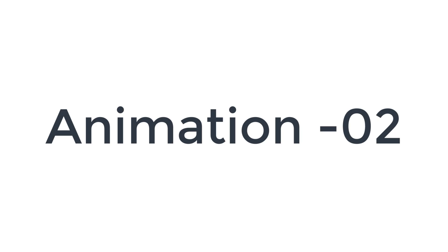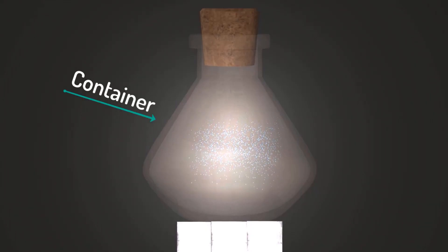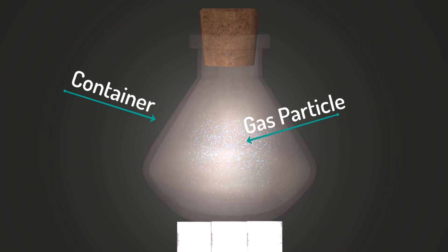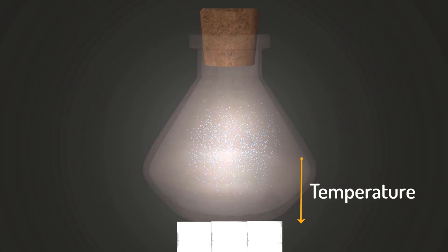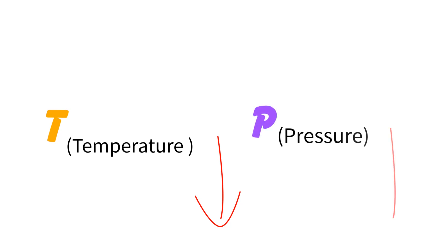Let's watch another animation. Container, gas particles. See, temperature is going down and at the same time pressure is also decreasing on the gas particles. After watching this animation, it is clear that when temperature decreases, pressure on the gas particles also decreases.